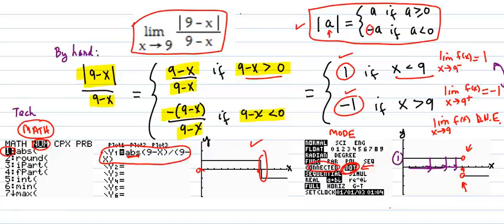And then, coming from the right, as x goes down to 9 from the right, all the function values there are negative 1. So the limit coming from the right will be negative 1. Since the limits on the left and right do not equal each other, the answer is that the limit does not exist.